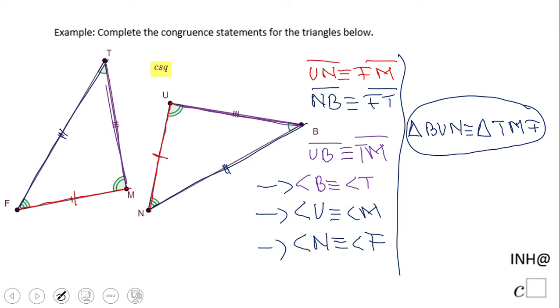Is this the only one? No. I can switch the things here. Let's say I will say UNB. That will be also congruent. But now we need to be careful here in the second one. So U corresponds to M, N corresponds to F, and B corresponds to T. So again, there are multiple ways to write this congruence statement. Be careful. You use the corresponding sides. And that's it.